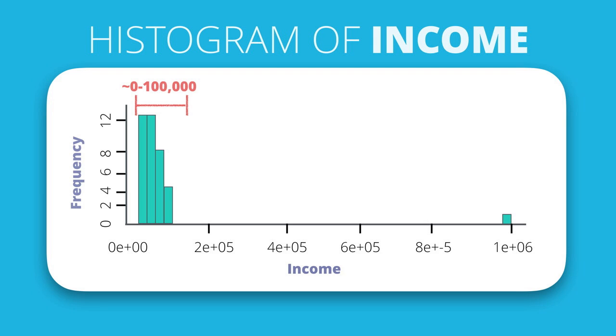But there's one value, someone making a million dollars, that we can see out here on the right. That might fit with what we've described as extreme or abnormal.